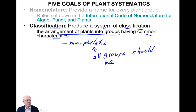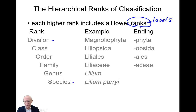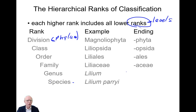Since we're talking about classifications, let's look at some of the ranks or levels of classification. We go from the division down to the species level and even below. The division is called the phylum in zoology — same level in the hierarchy. Within each genus there are multiple species; within each family there are multiple genera, etc. As we go up, each level includes multiple ones at the lower level.